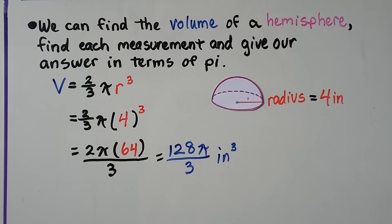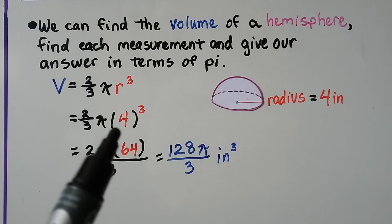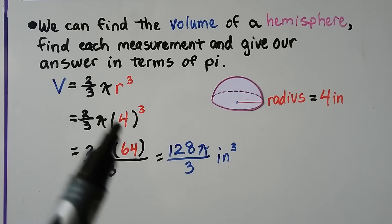We can find the volume of a hemisphere, find each measurement, and give our answer in terms of pi. We're given that the radius is 4 inches, so we're going to put that in here as 4 cubed. In our formula, 4 cubed is a 64.